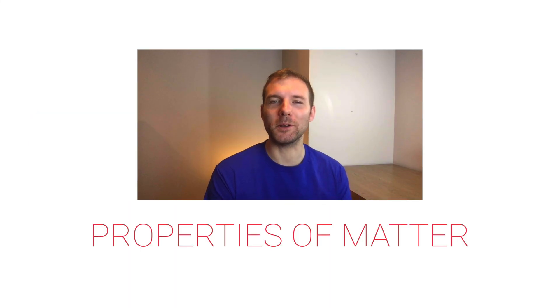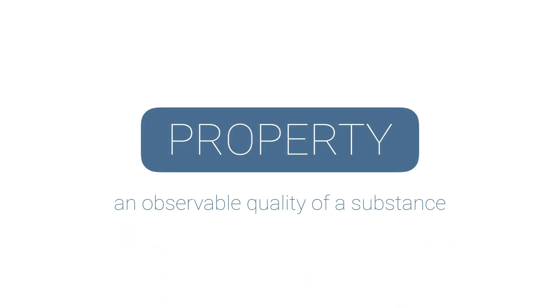In this video we're talking about the properties of matter. So first let's talk about what a property is. A property is an observable quality of a substance. It's something we can observe about something and say yep, that thing has that thing.